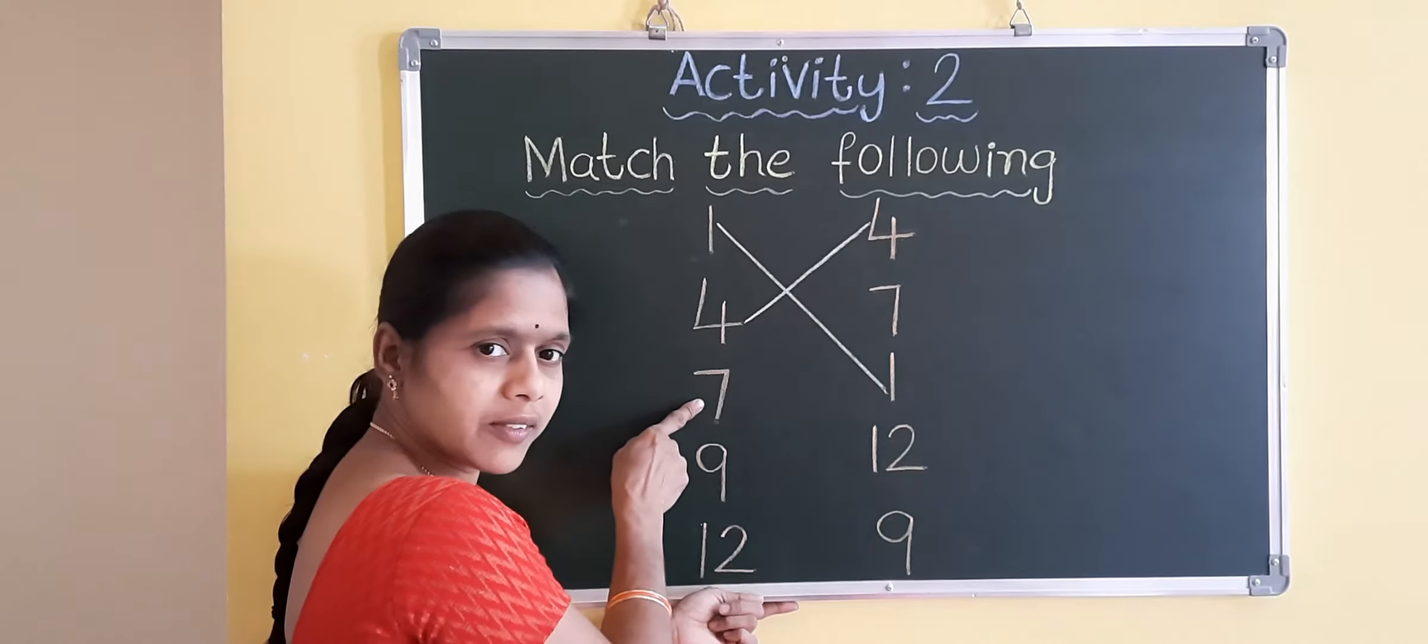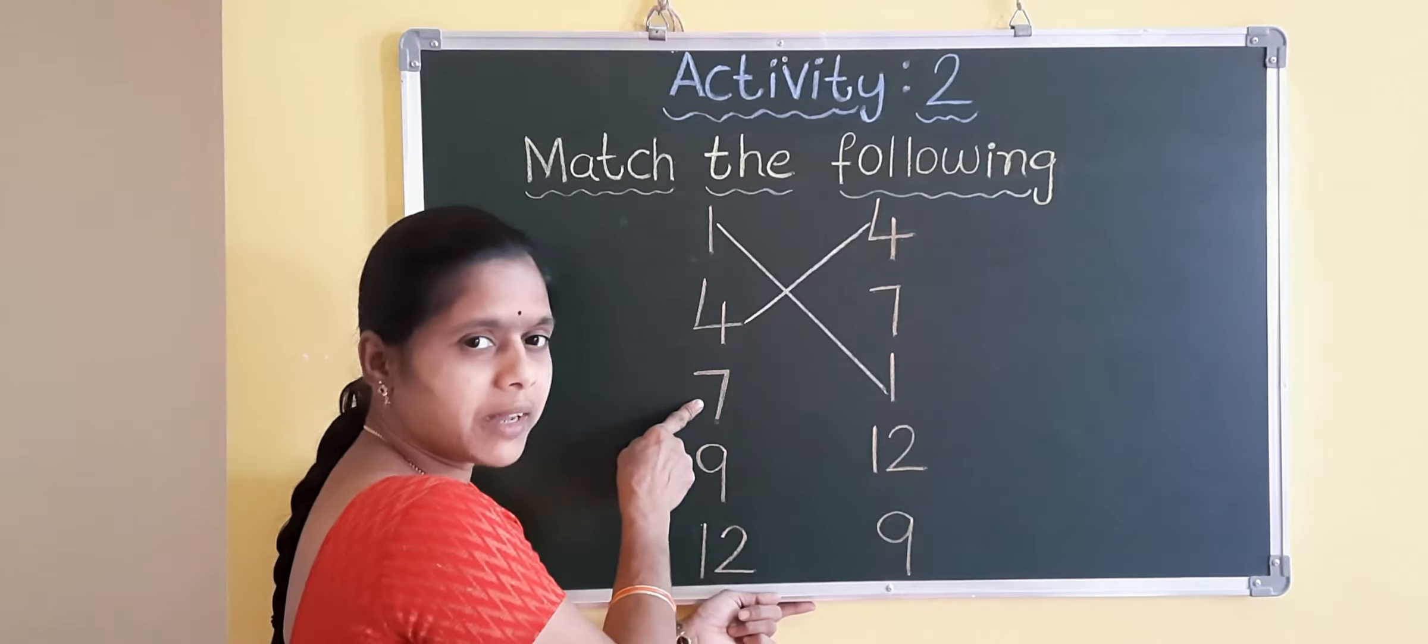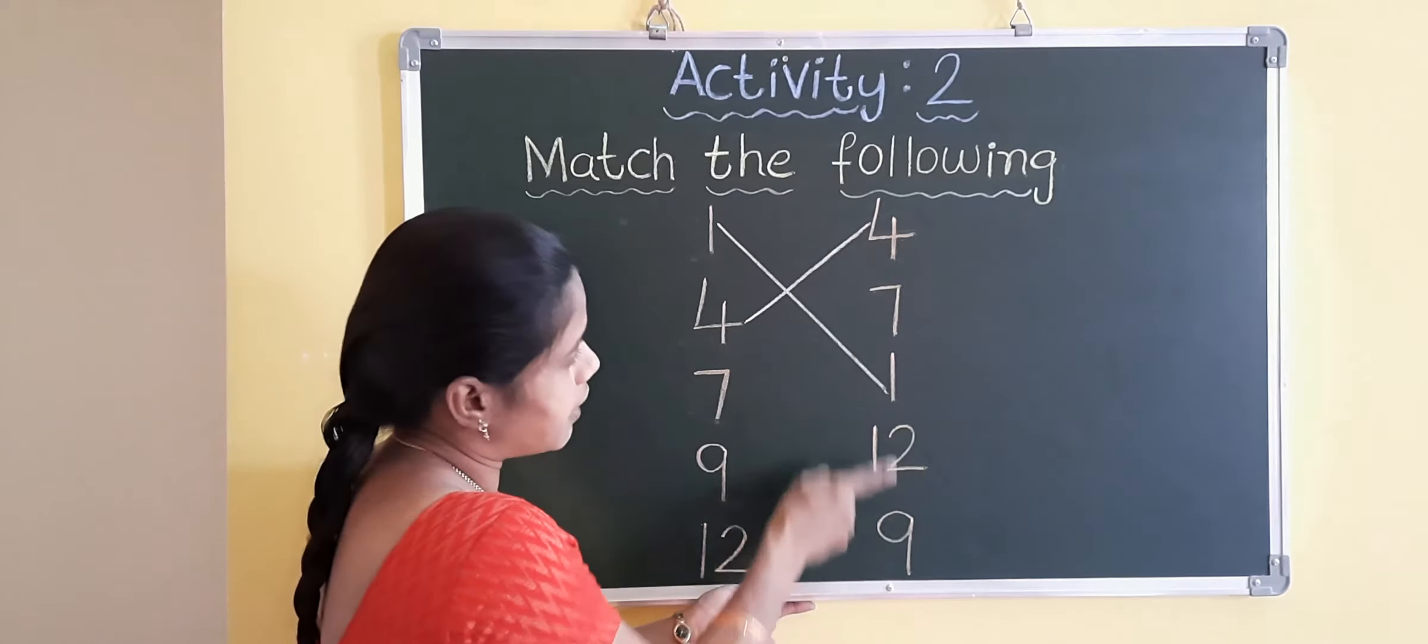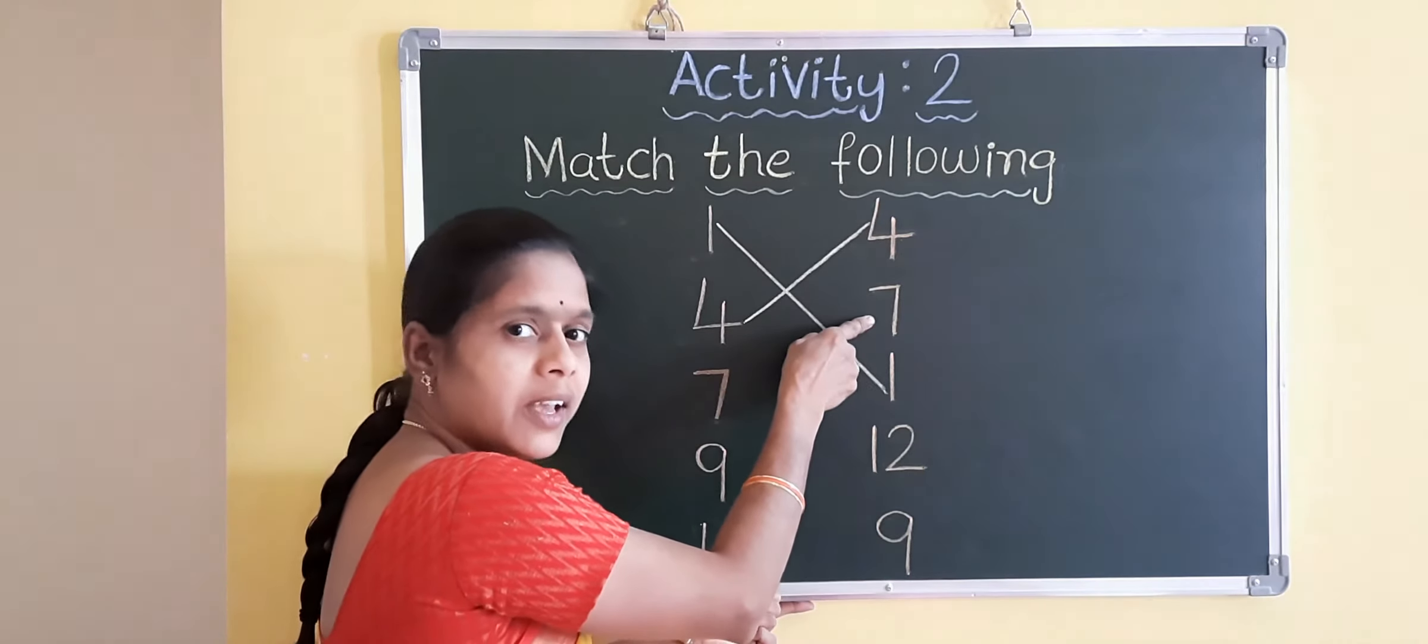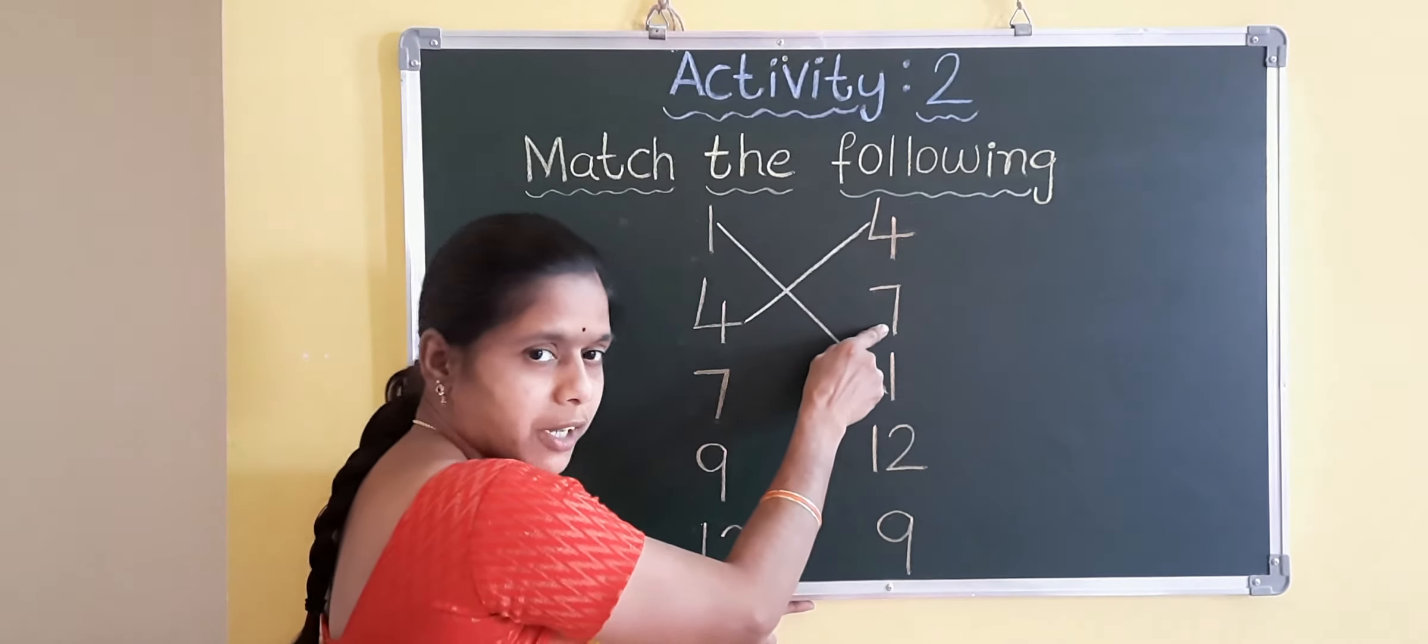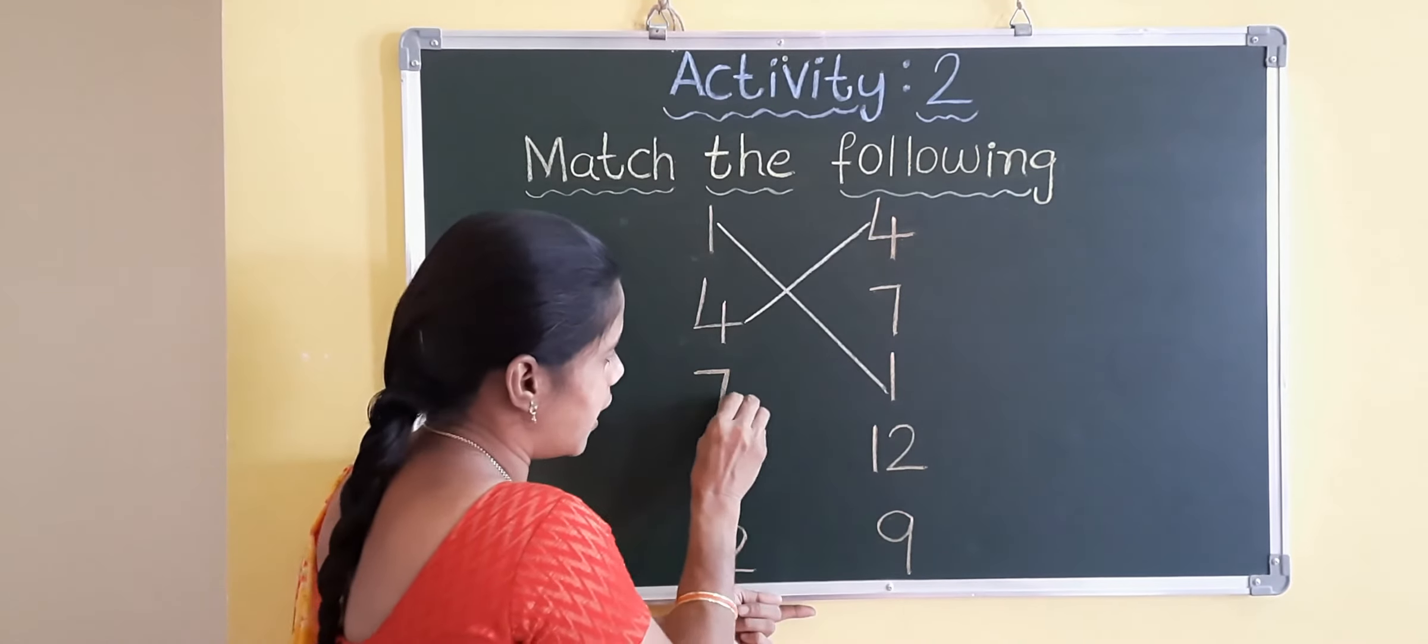Which number is this? Yes, this is number seven. Right side, where is the number seven? Is it seven? Yes. Seven, seven. Same number. So, match it. Draw the line.